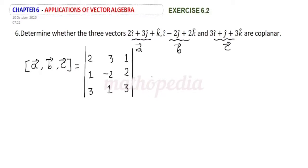Now expand this determinant. So 2 into minus 6 minus 2, minus 3 into. Leaving out the first row and second column, cross multiply, 3 minus 6.